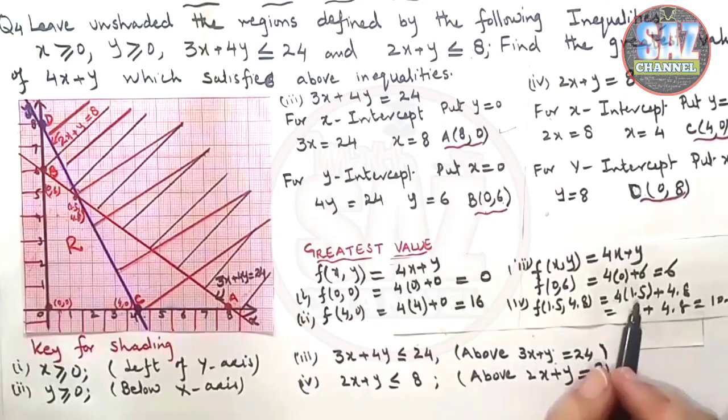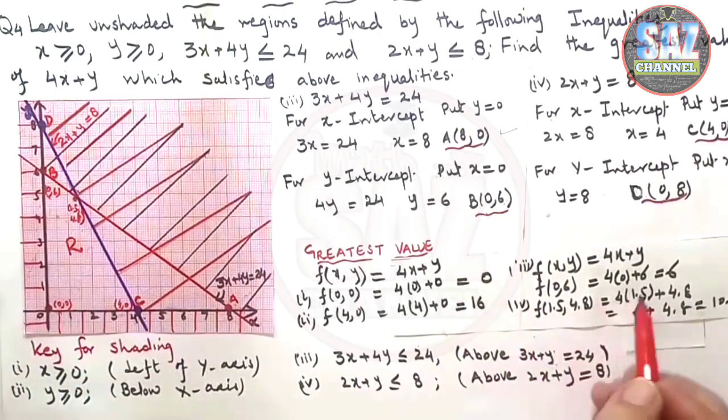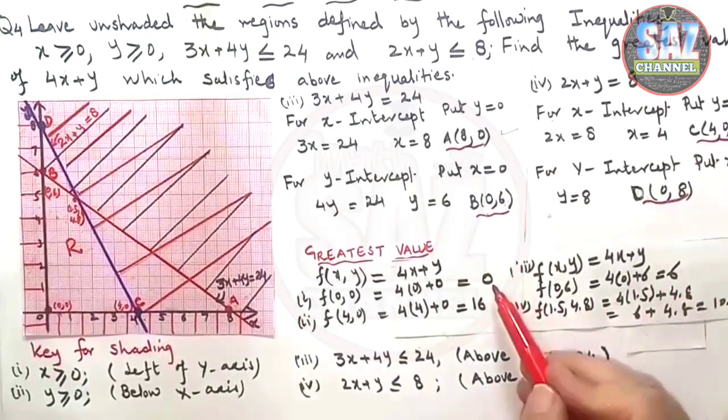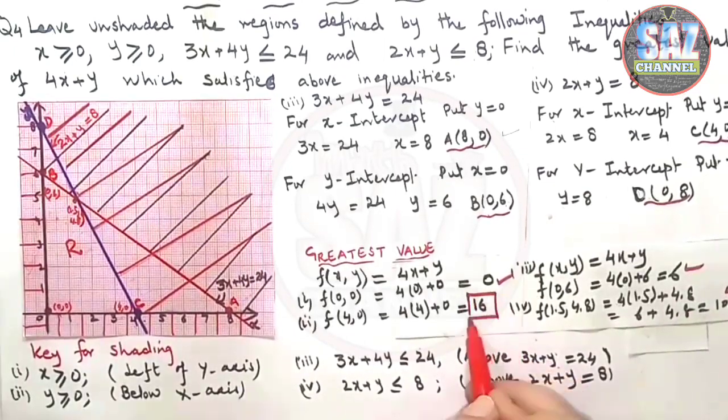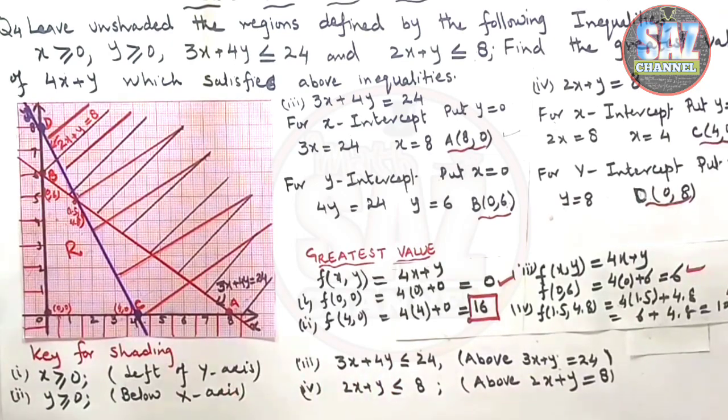Now let's reread the question. Question says find the greatest value of. If you look at all answers, one answer is 0, then 16, then I am getting 6 and 10.8. 16 is the largest answer. So this is my required answer. I hope you have understood today's lesson.